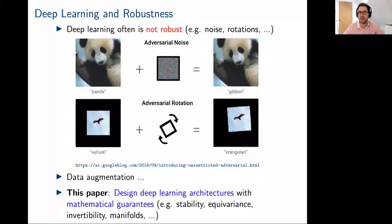In this paper we take a very different approach. We want to design deep learning architectures with mathematical guarantees that are guaranteed to be equivariant or invariant, which may be invertible, or where the output may lie on manifolds, such that these problems that I outlined cannot happen anymore and they're guaranteed not to happen.